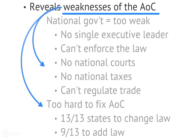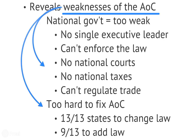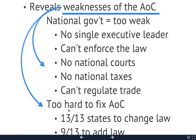The weaknesses in the AOC were clear: the national government was way too weak. There was no power to get Daniel Shays to stop, no leader to take control. Any laws they had couldn't be enforced — they could declare war but who would enforce laws? There were no courts, no national taxes, and no way to regulate trade coming in and out of the country or between states.